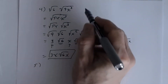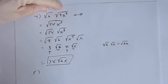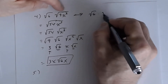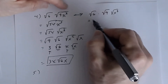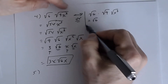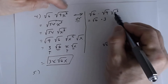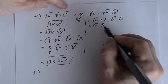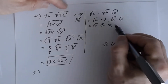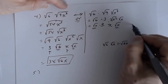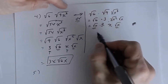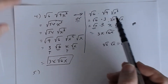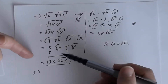Alternatively for number four, you could simplify √(9x³) first: write it as √9 × √(x²) × √x = 3x√x. Then √6 times 3x√x gives 3x times √6 times √x = 3x√(6x). Either approach gives the same answer: 3x√(6x). There's not always one way to approach these problems.